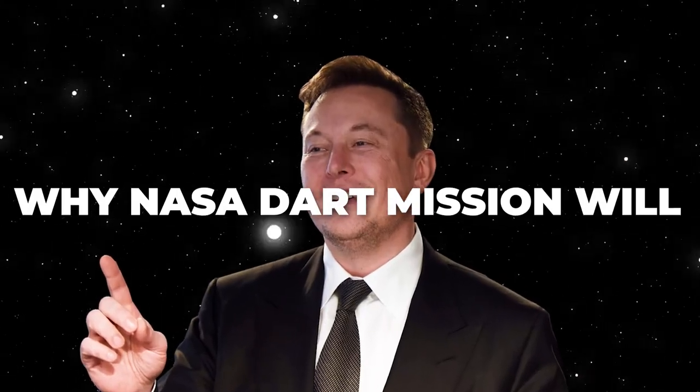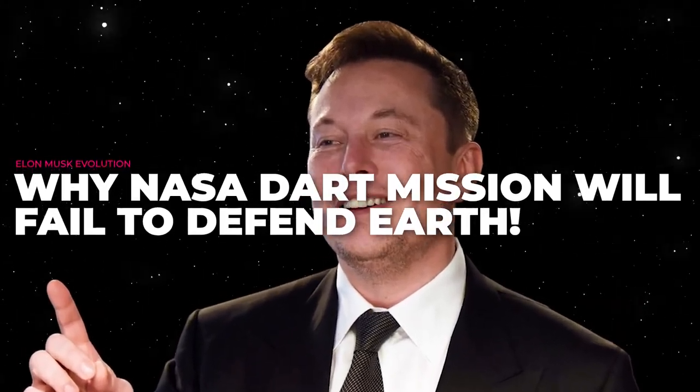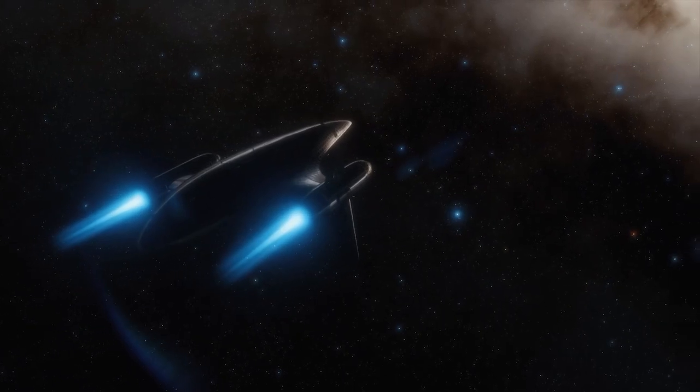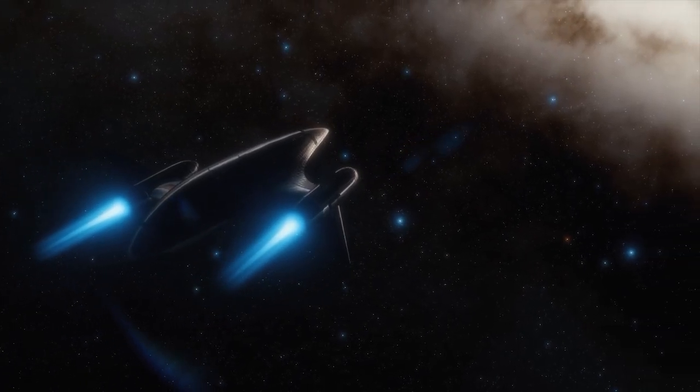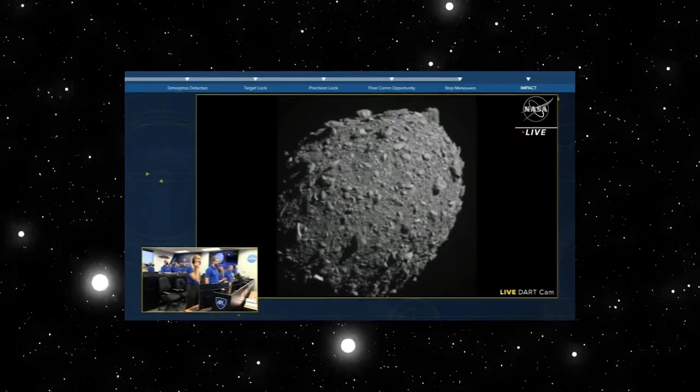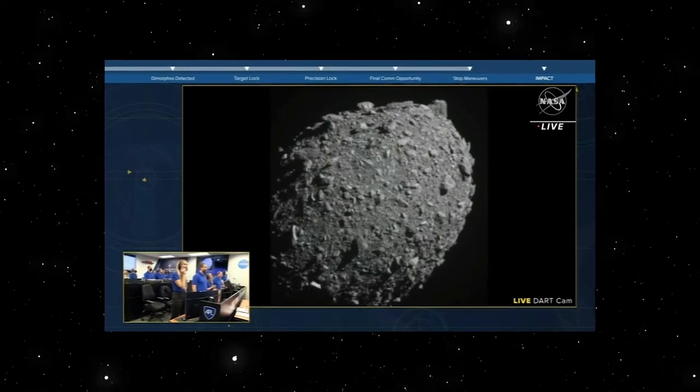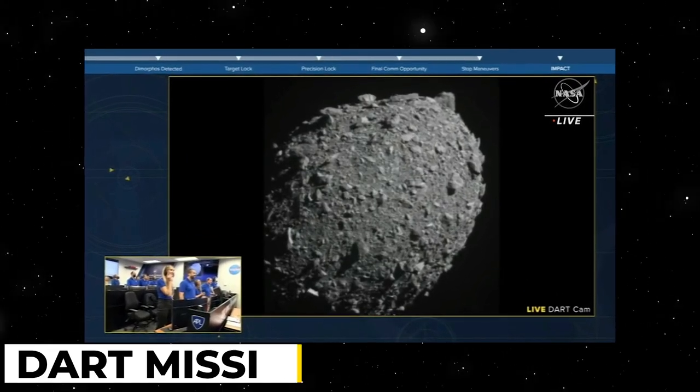Elon Musk Explains Why NASA's DART Mission Will Fail to Defend Earth. On September 26, 2022, a spaceship was successfully crashed into the asteroid Dimorphos as part of the Double Asteroid Redirection Test, or DART, mission.